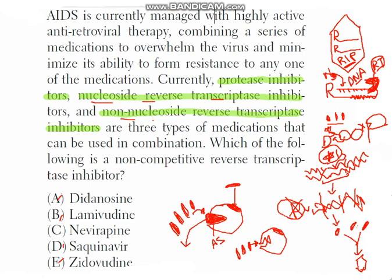Saquinavir is a protease inhibitor — it attaches to the active site of the protease enzyme. Among all these medications, there is only one that attaches to the non-active site and changes the configuration of the enzyme. That medication is a non-competitive, non-nucleoside reverse transcriptase inhibitor — and it is nevirapine. So nevirapine is the answer: it is a non-competitive, non-nucleoside reverse transcriptase inhibitor.